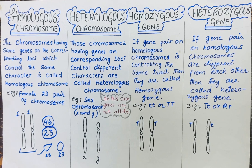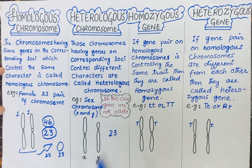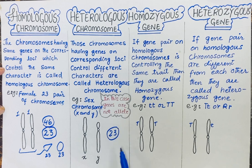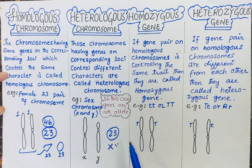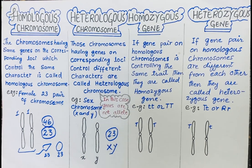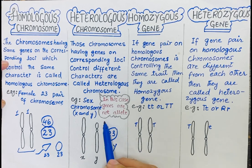Let me explain why we use the word heterologous. In the human male, the 23rd pair of chromosomes is called the sex chromosome. It is called the sex chromosome because this 23rd pair determines whether a human is male or female.